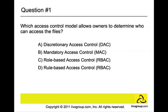Question number one. Which access control model allows owners to determine who can access the files? Is it discretionary, mandatory, role-based, or rule-based? The answer is A, discretionary access control. In this access control, the access policy is determined by the owner of an object. The owner decides who is allowed to access the object and what privileges they have.